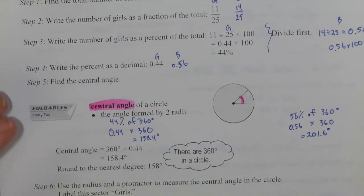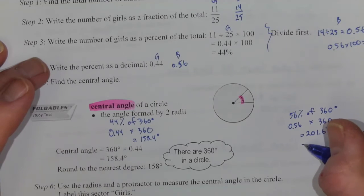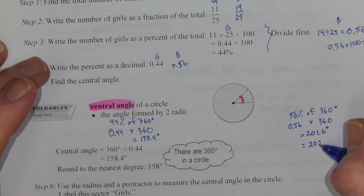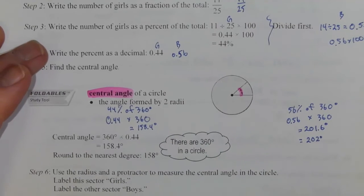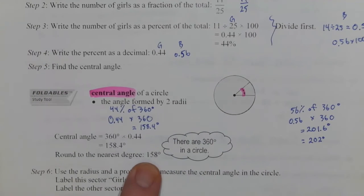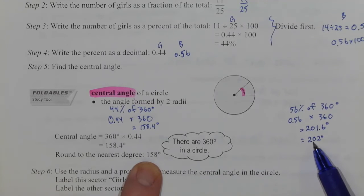So again, accuracy when you're drawing is probably not that good, so I'm just going to say that it's 202 degrees. Now take a look: 158 degrees plus 202 degrees equals 360 degrees. There are only girls and boys in this class, so the entire circle should be represented by girls and boys. And in this case when you add the two percentages together, that's what you get.